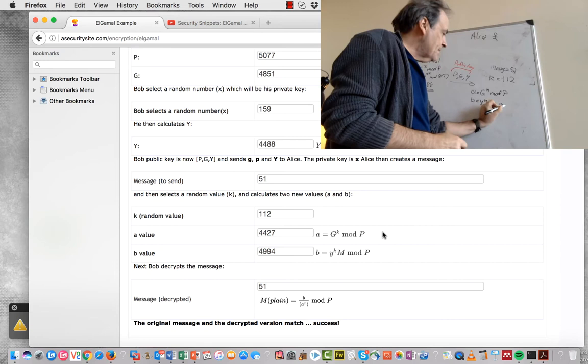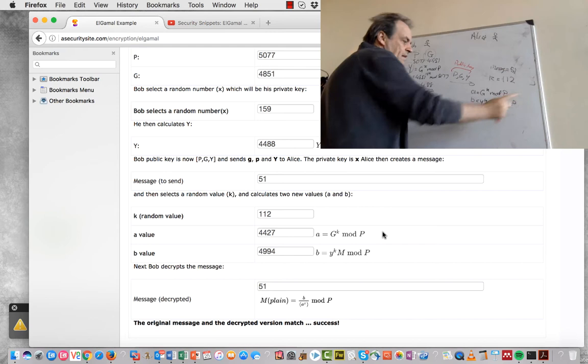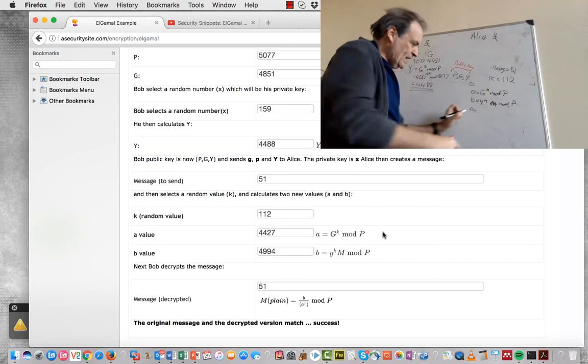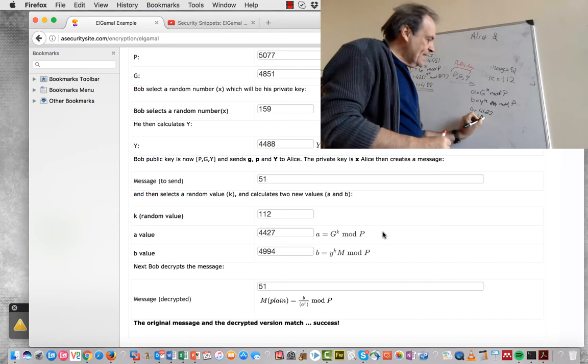51, and then take the mod of P. So when we do that calculation, I won't actually go through the calculation here, but in this case we get a value of 4427, and the B value of 4994.